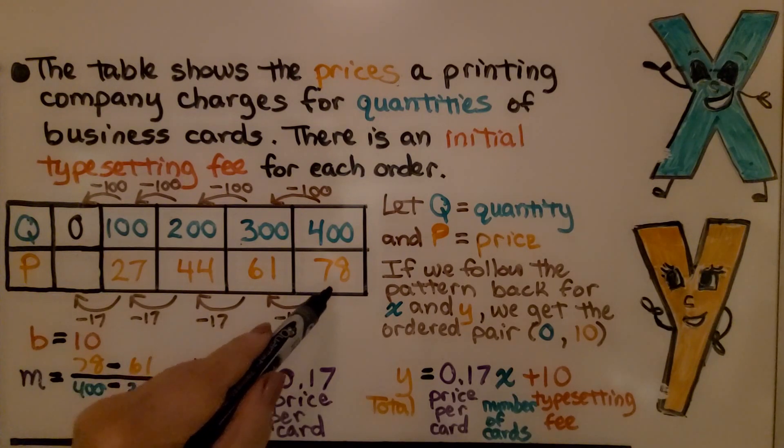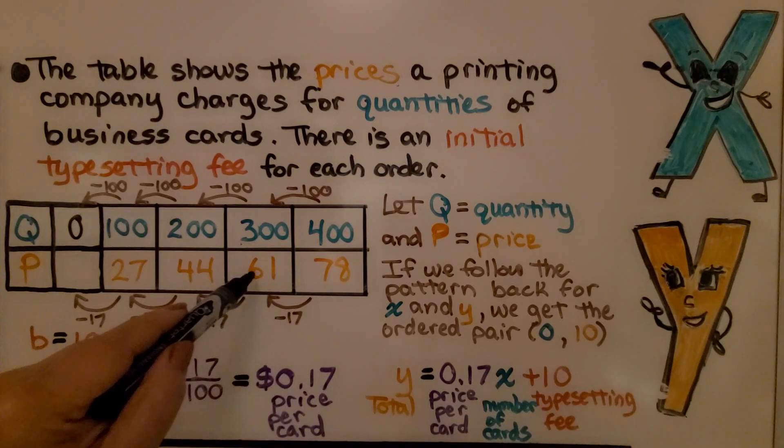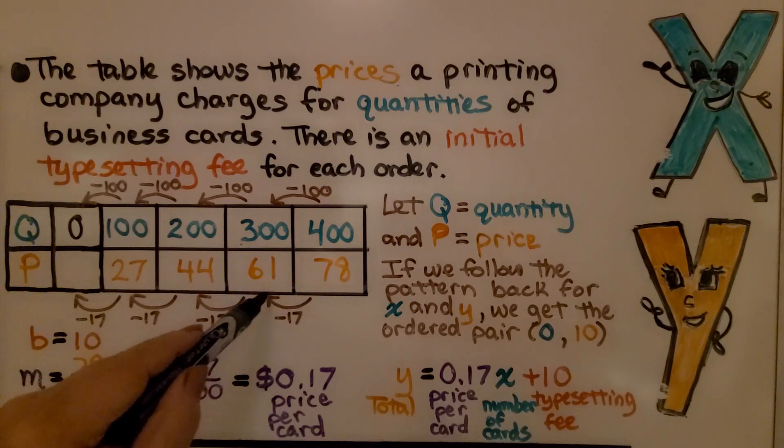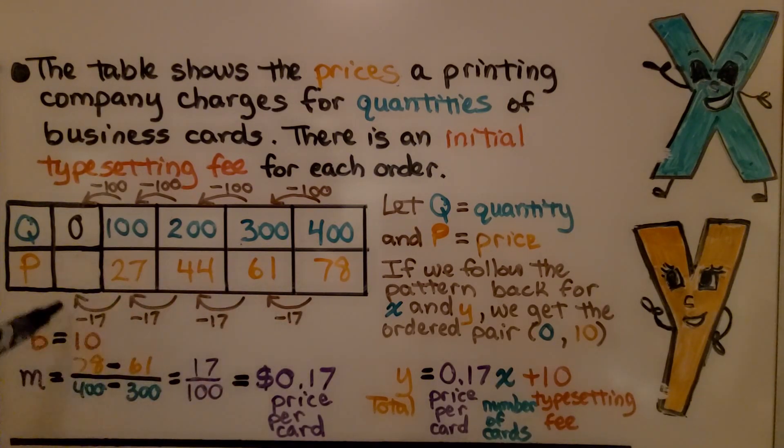We notice that 78 minus 61 is 17. It's a difference of 17. If we subtract 17 going all the way back each time, we're going to get 10 here. 27 minus 17 is 10. We know b, the y-intercept, is 10.